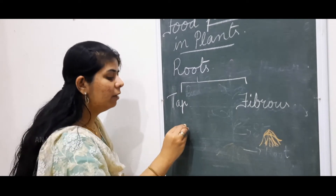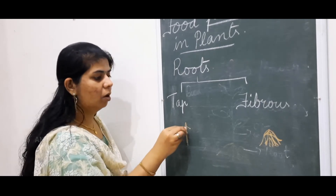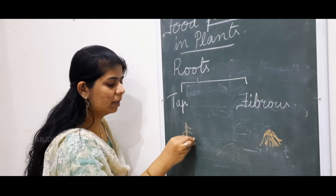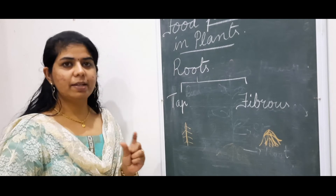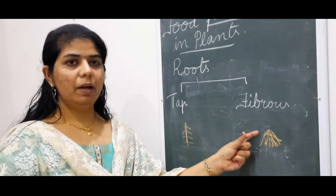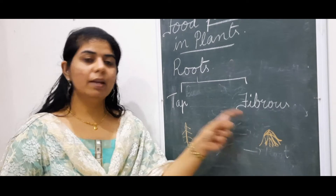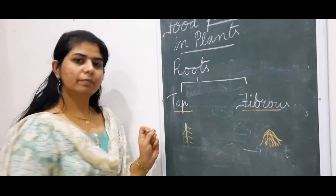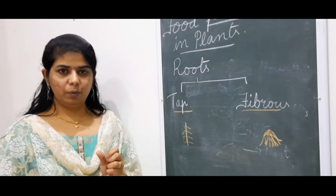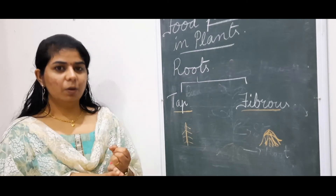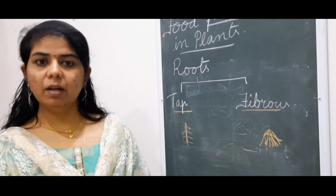For tap root, there will be a main root coming down, and from that, small hair-like roots grow — not very bushy, just small hairs. That is the tap root. So roots are of two types: tap root and fibrous root. The main functions of the roots are: the roots help the plant to get fixed in the soil, and they absorb water and nutrients from the soil.